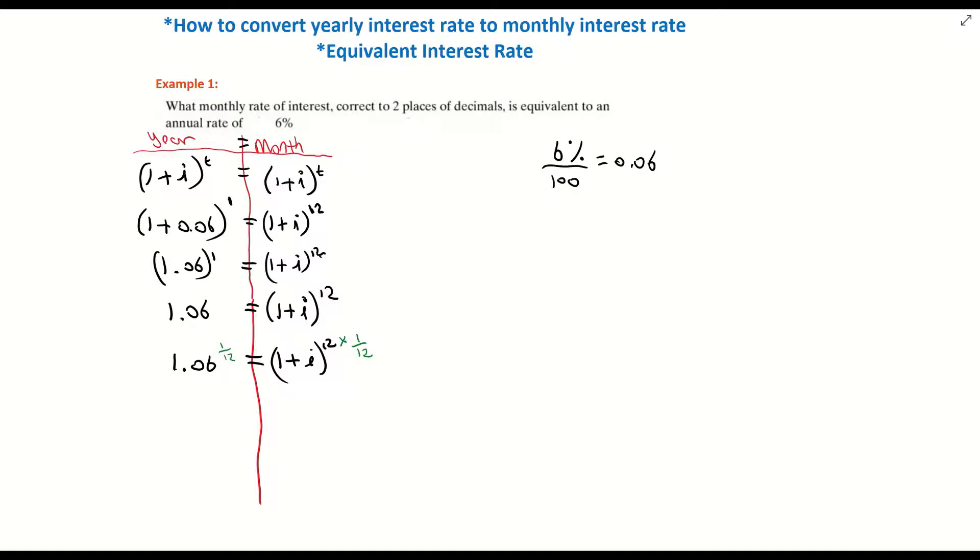So that's now going to be written as (1.06)^(1/12) equals (1 + i)^(12 × 1/12). And if I do that to one side of an equation, you have to do to the left hand side to balance it out. And when I go to my calculator and multiply 1.06 to the power of 1/12, I'm getting 1.0048676 equals 1 + i. Now it's to the power of 1 because 12 by a twelfth is 1. I can now multiply in that power of 1, which just gives me 1 + i.